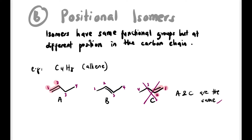If we number the carbons 1, 2, 3, 4: for structure A, the double bond is between carbons 1 and 2; for structure B, between carbons 2 and 3; for the proposed structure C, the double bond would also be between carbons 1 and 2 — the same as A — so it's not a distinct isomer. Therefore only A and B are positional isomers. The reasoning for numbering from left or right will be covered in the alkene chapter.